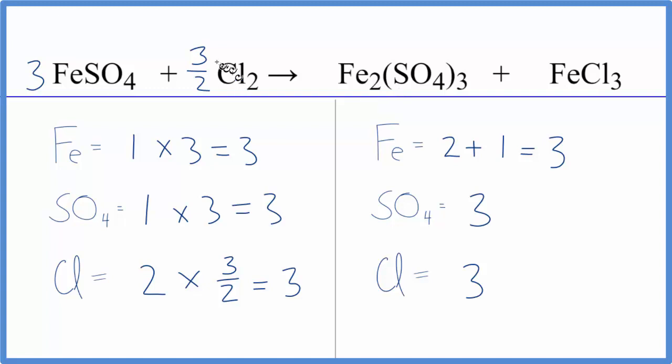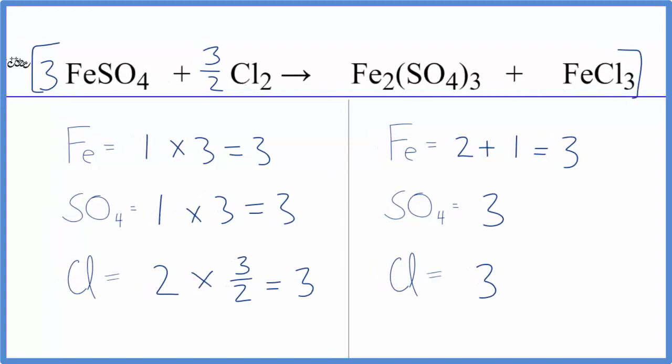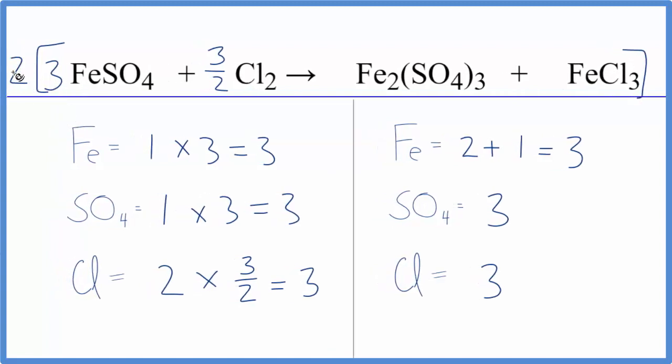Some teachers, though, they don't like the fractions. So to solve that, we can multiply everything here by two. When we do that, two times three, that's six. Two times three over two, the twos cancel out. Three. Two times one is two. Two times one is two. So that would give us these coefficients here.